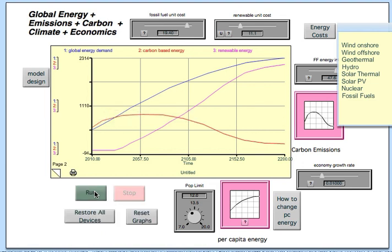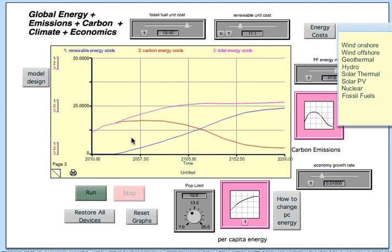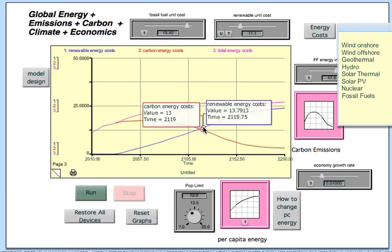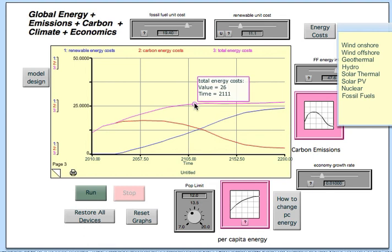Then I'll look on the next page and see the costs. In blue are the renewable energy costs, in red are the carbon energy costs, and in pink or purple here are the total renewable energy costs.